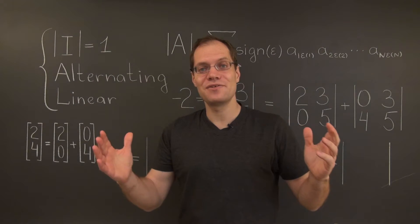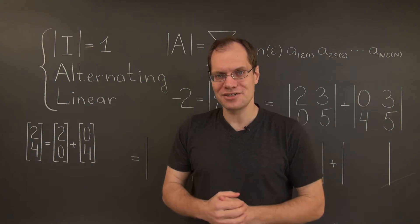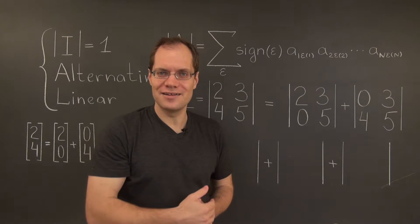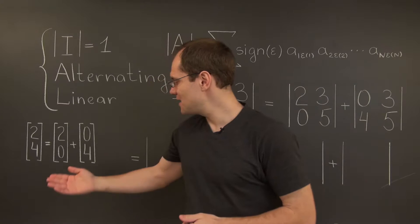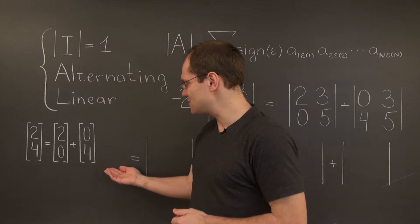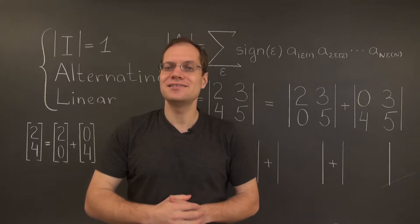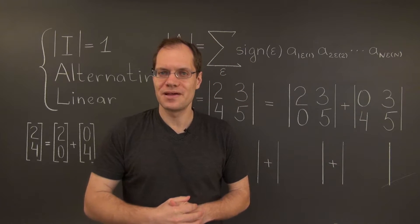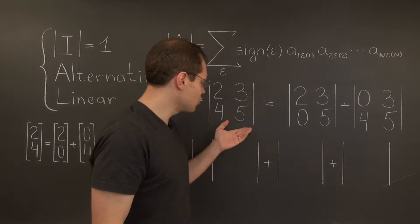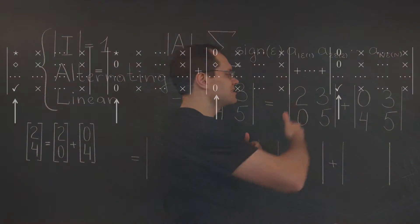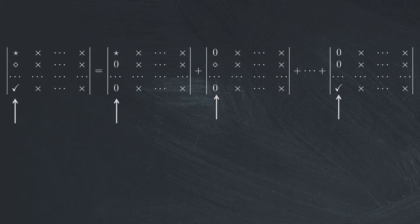And in the case of an n×n matrix, I would think of the first column as a sum of n vectors, each one with a single non-zero entry. Then the determinant would be represented as a sum of n determinants, where the first column is borrowed from each one of these vectors and the remaining columns are the same.